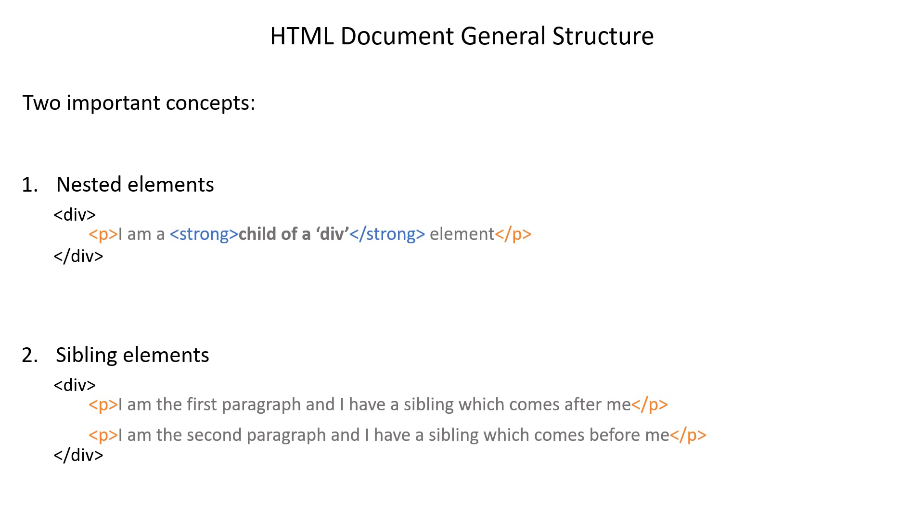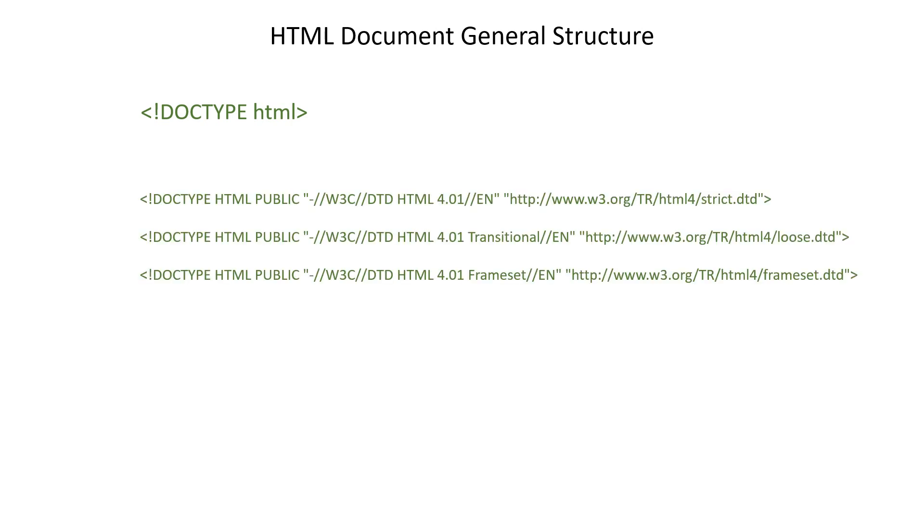With those two concepts in mind, let's explore the general structure of an HTML document. The very first thing all HTML documents should have is the doctype. In older versions like HTML4, there were a number of rules the developer could choose, and the doctype told the browser which rules to use - those doctypes looked very lengthy. Fortunately, HTML5 simplified the doctype to the short form we now use. Just include it at the beginning of every HTML document.